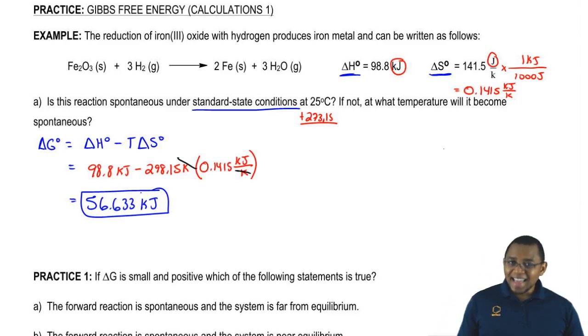If delta G is negative, then it's going to be spontaneous. The fact that we got a positive answer means that this reaction is not spontaneous.